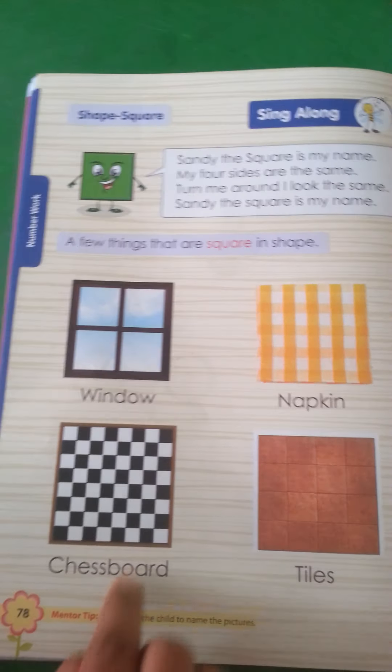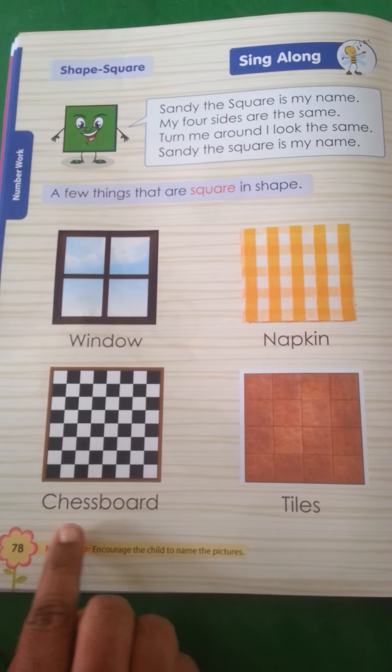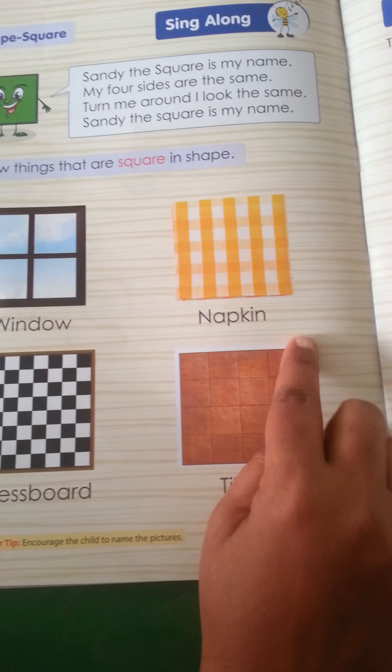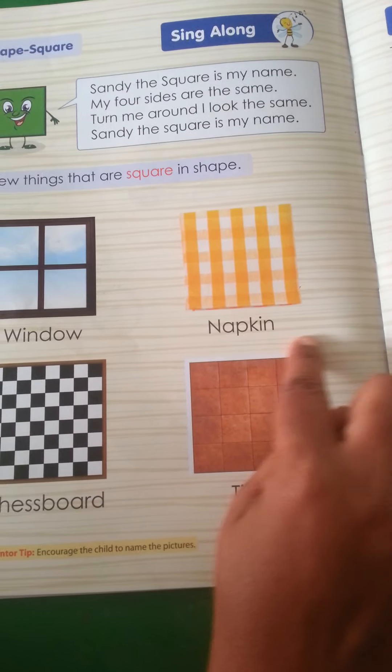Chess board. Chess board kunsa shape ka hota hai? Square shape ka. See this tiles? Tiles kunsa shape ka hai? Square shape ka.